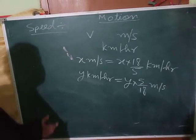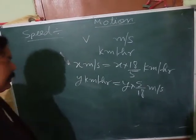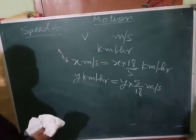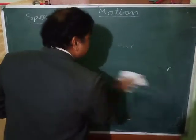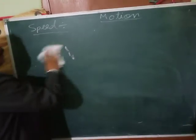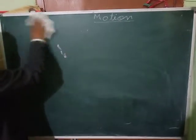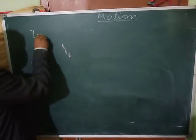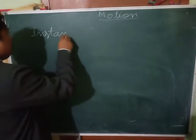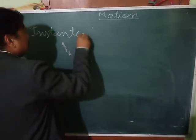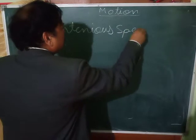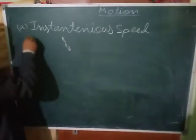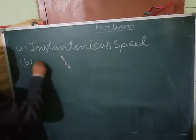Speed is actually divided into two types: there is instantaneous speed and there is average speed.